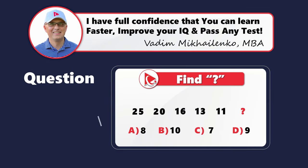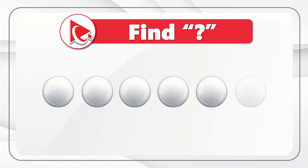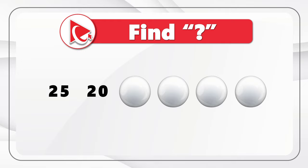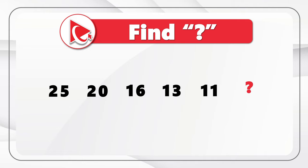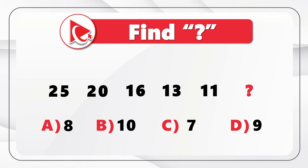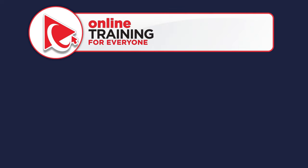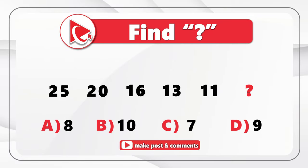Here we have a sequence of numbers and we need to find the missing number, which is the next in the sequence. The numbers are 25, 20, 16, 13, 11, and then the missing number. You need to calculate it from four choices: A) 8, B) 10, C) 7, D) 9. I'm moving forward to share my version of the answer — if you have a better way, please post in comments.